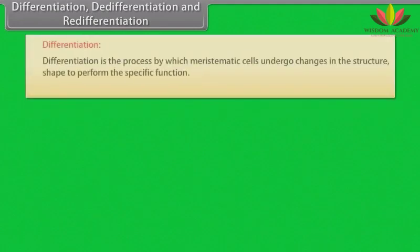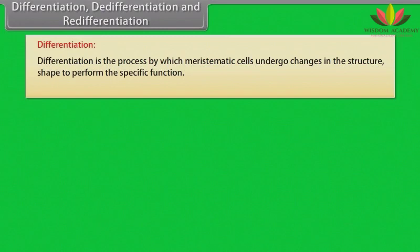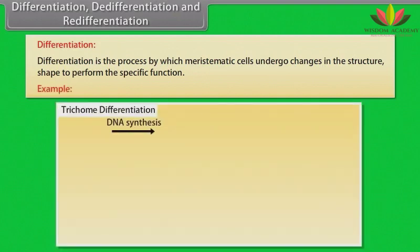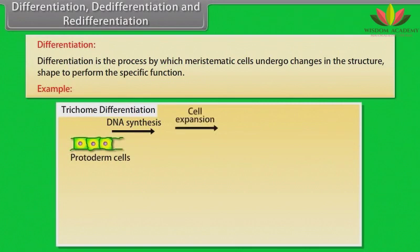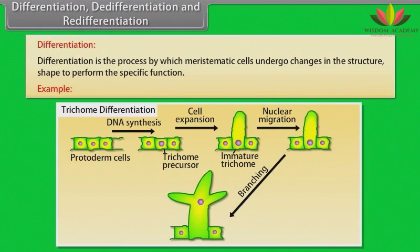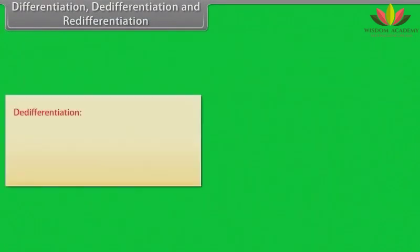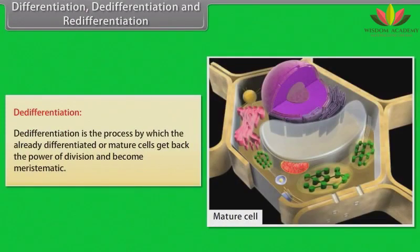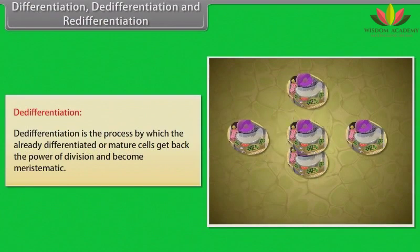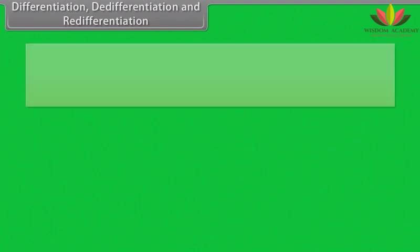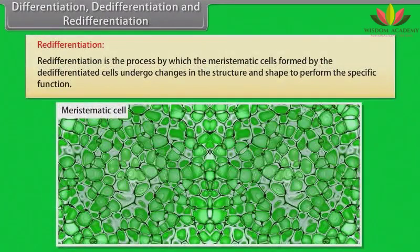Differentiation is the process by which meristematic cells undergo changes in structure and shape to perform specific functions. For example, after DNA synthesis of the protoderm cells, cell expansion takes place and it forms immature trichome. After that, nuclear migration takes place and then branching occurs until it reaches the maturation stage. De-differentiation is the process by which already differentiated or mature cells get back the power of division and become meristematic. Re-differentiation is the process by which meristematic cells formed by de-differentiated cells undergo changes in structure and shape to perform a specific function.